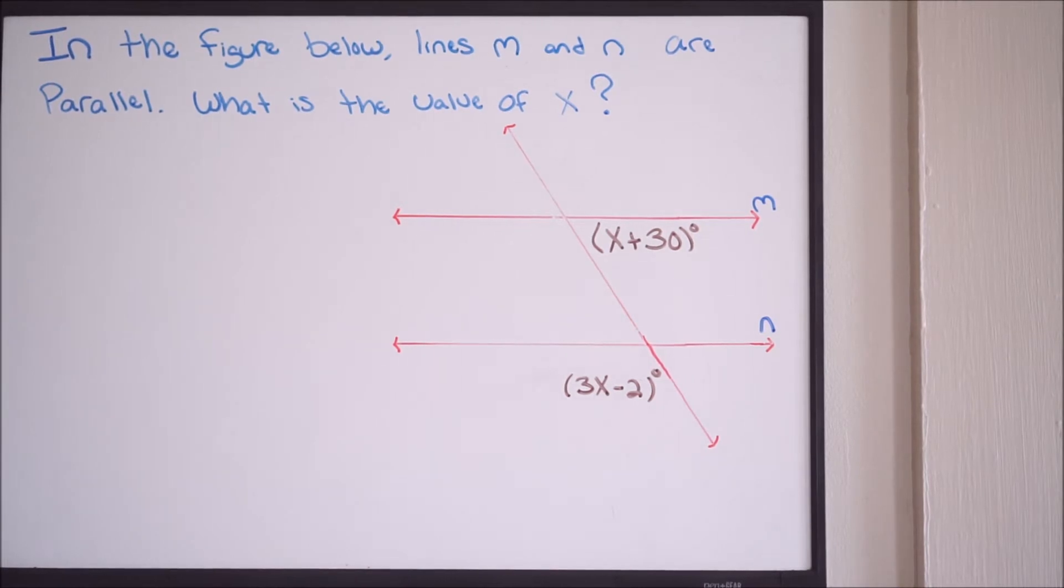So we can say here that we have this figure below, we know that lines m and n, those are going to be parallel, and they want us to find what is the missing value of x here. So we have to go back